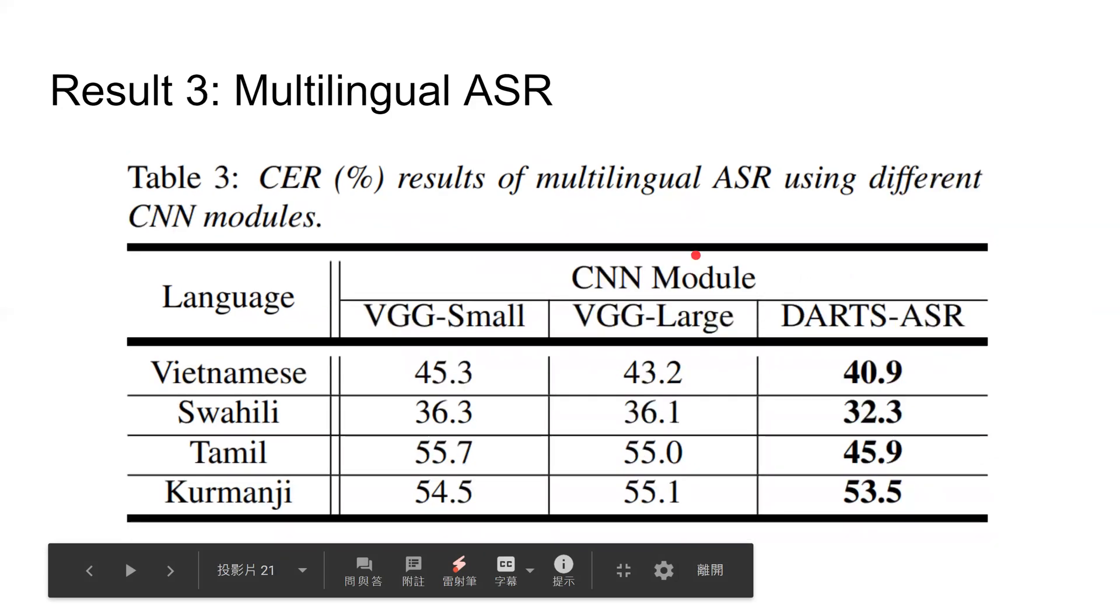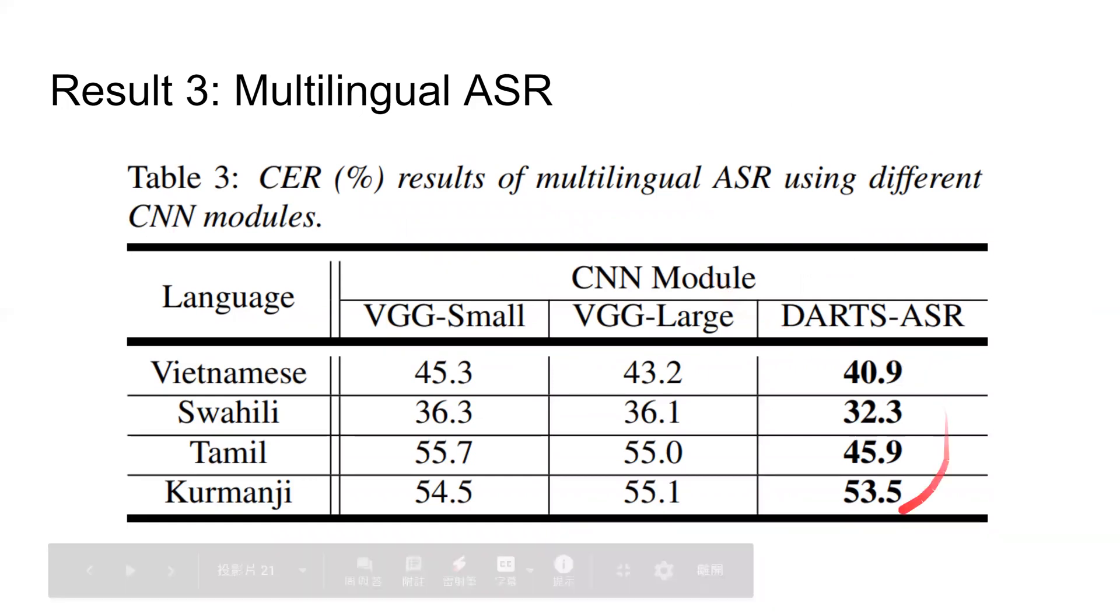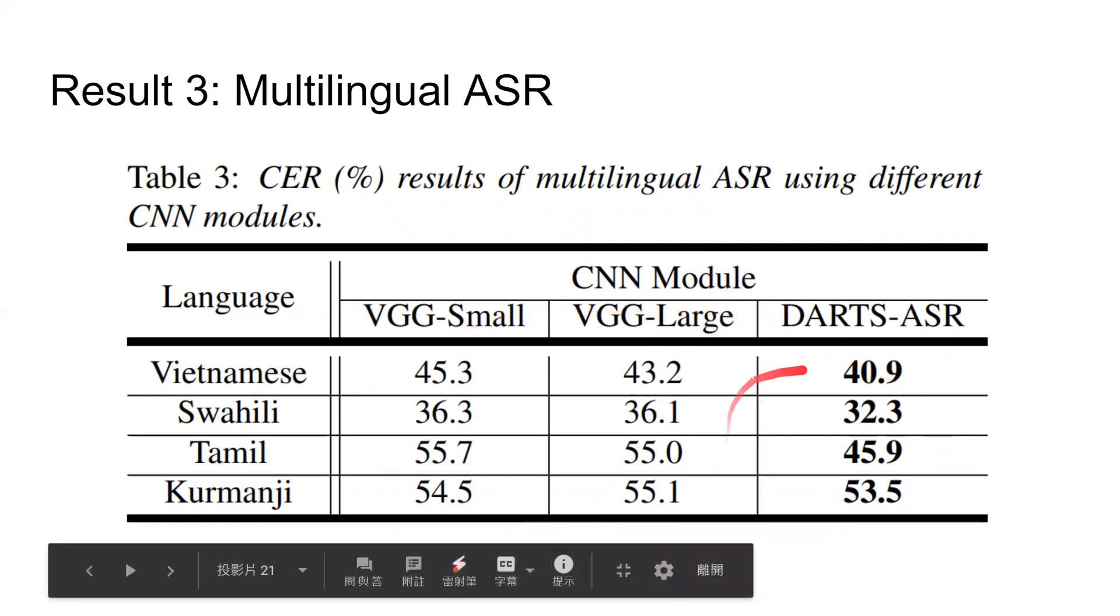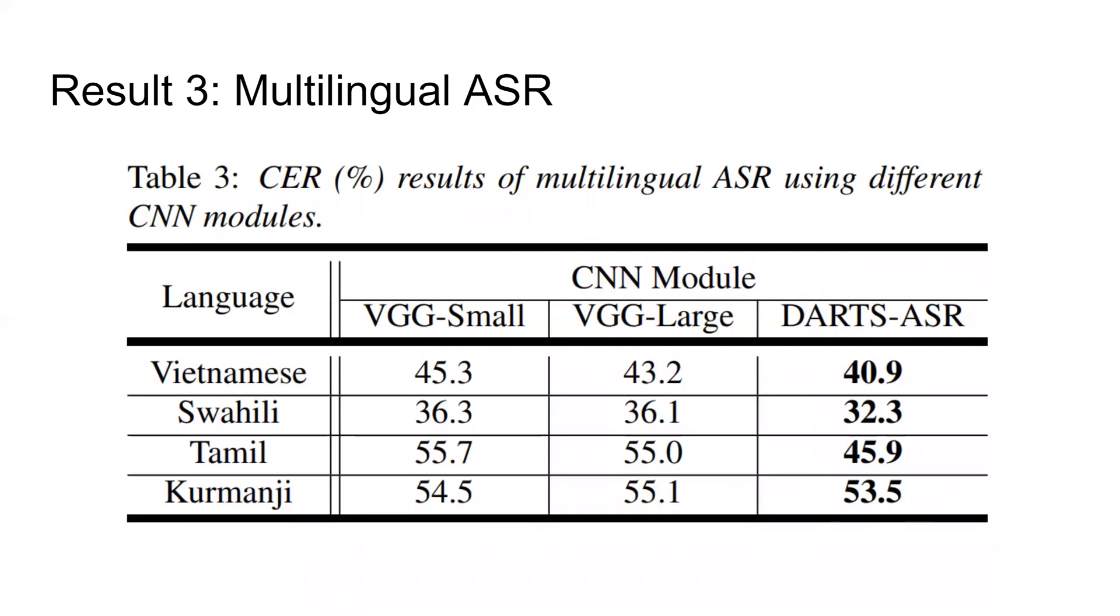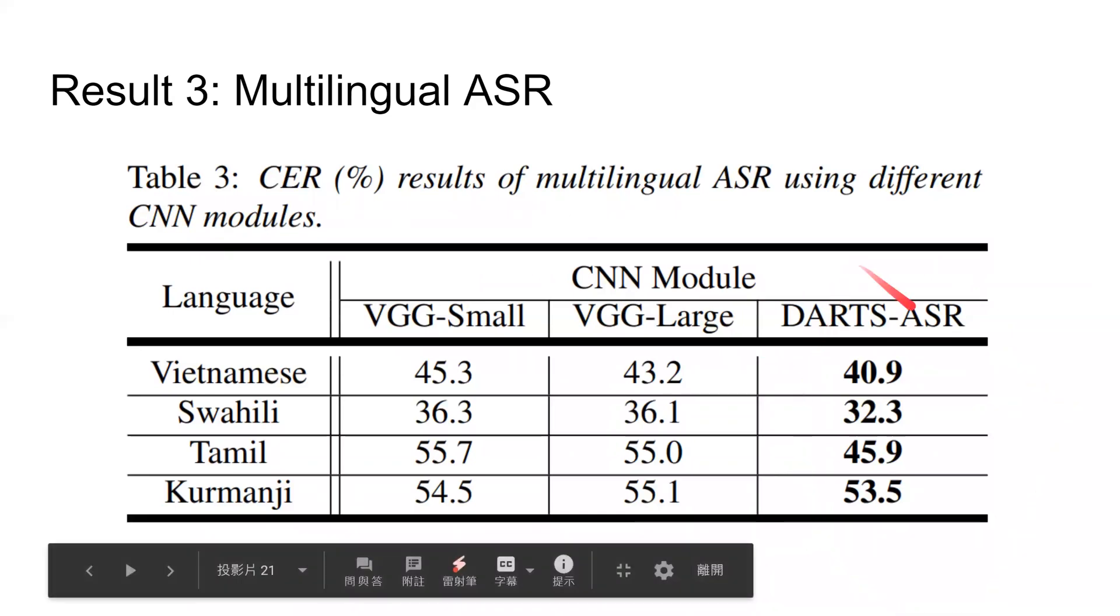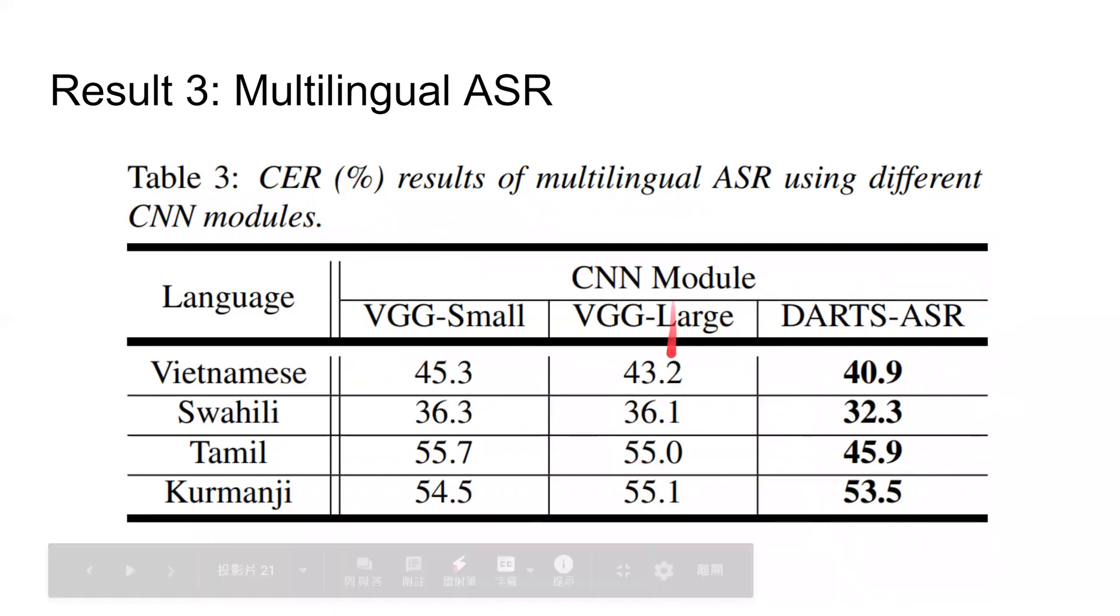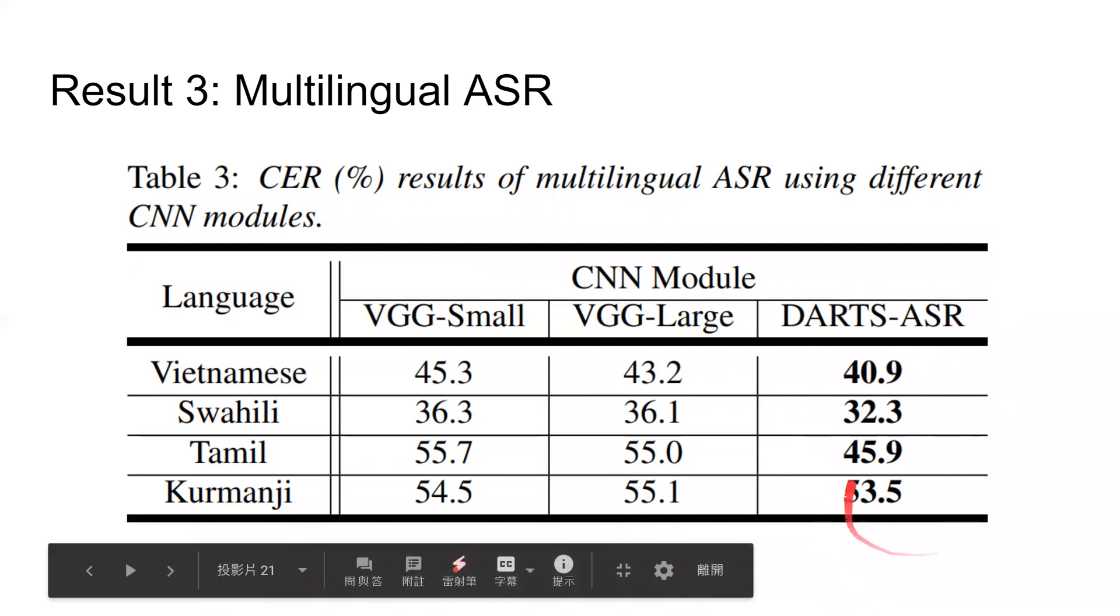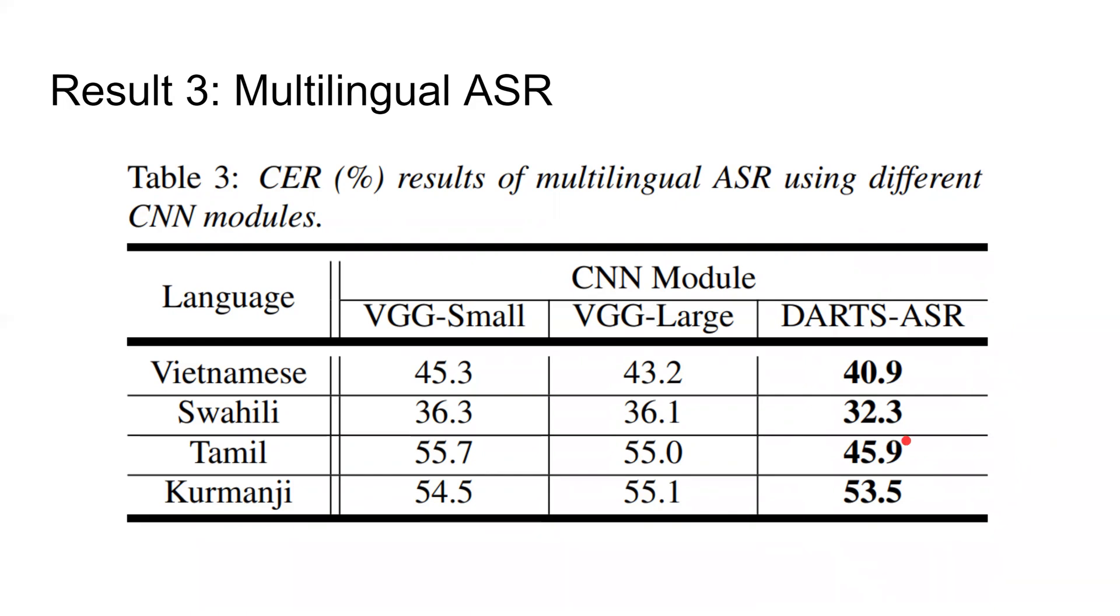In this table, VGG modules and DARTS-ASR are compared in the multilingual ASR setting. All three kinds of CNN modules get much better performance on multilingual ASR than monolingual ASR. Among those, DARTS-ASR still outperforms both VGG small and VGG large by a significant margin. It indicates DARTS-ASR can also benefit from multilingual learning to build a shared acoustic pre-trained model with a better architecture and parameter weights.